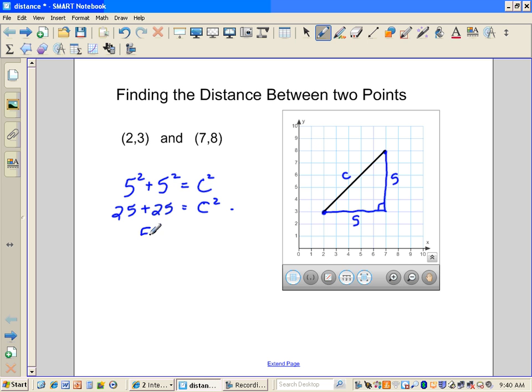And 50 is equal to C squared. So to find just C, I'm going to take the square root of 50, which is approximately 7.07. So that's going to be my length of C.